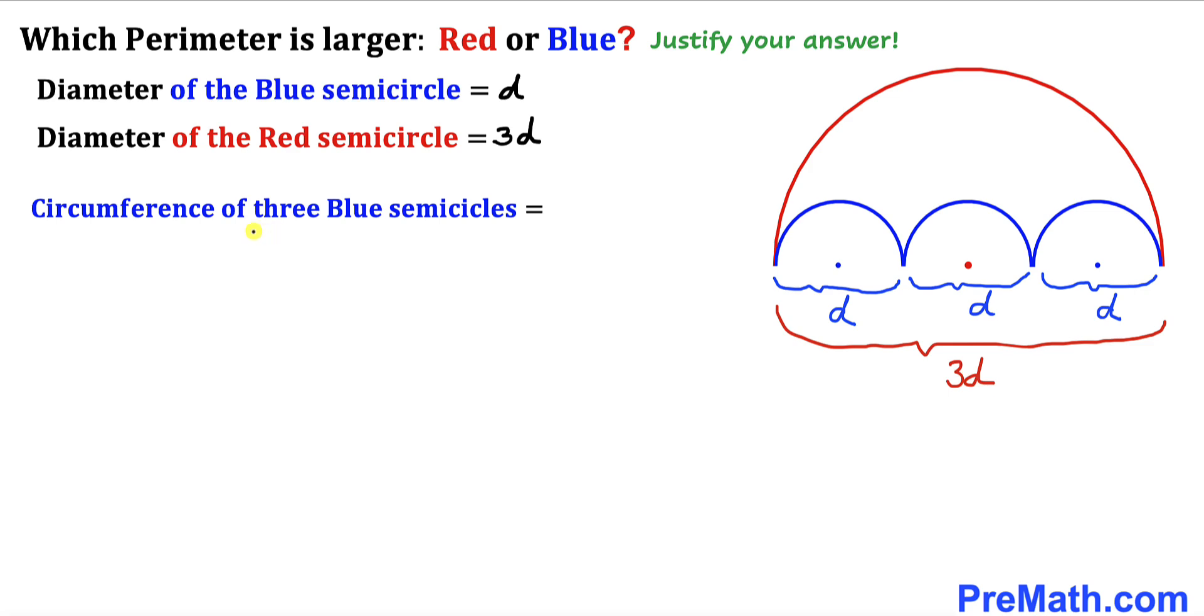Therefore, the circumference of the three blue semicircles is going to be 3 times πd divided by 2, since we are dealing with semicircles. If we simplify, we can write this as 3πd divided by 2. This is the circumference of all three blue semicircles. Let me call this equation number 1.